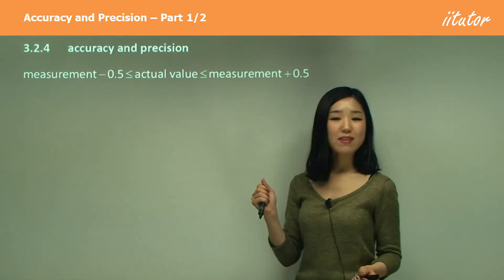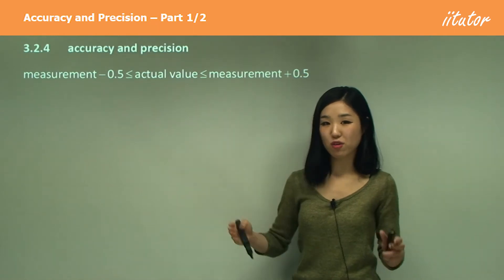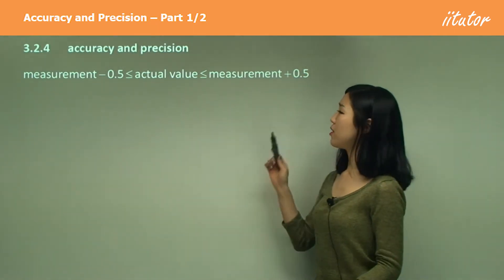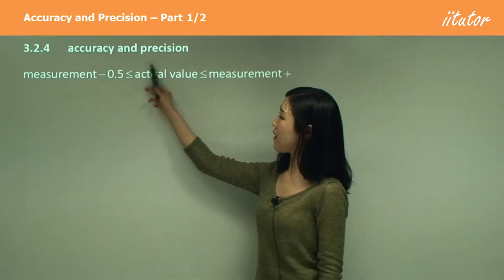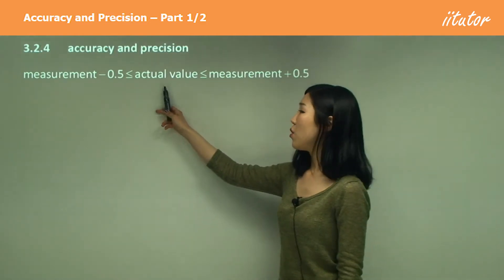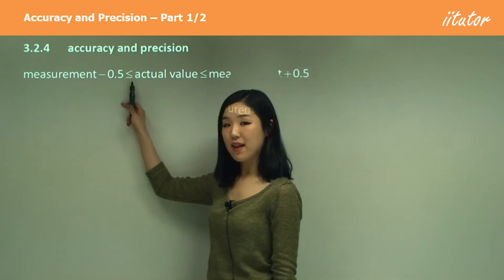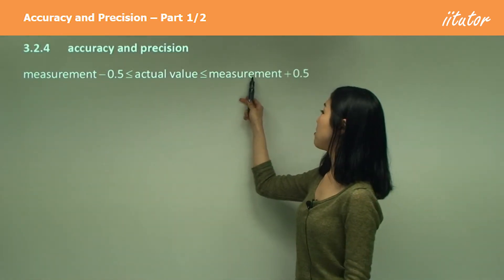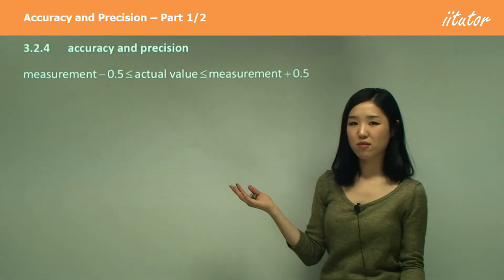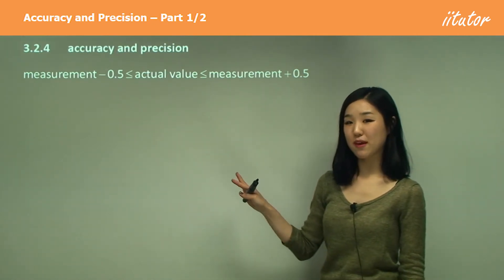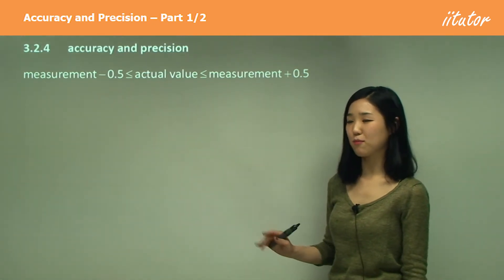In this part, you basically have to find that boundary. Now it's very simple. All you need to do is if the actual value is some value here, we say it's going to be in between some measurement minus a half and a measurement plus a half. I'll try and explain to you what this means when we get to the questions because it's very simple.